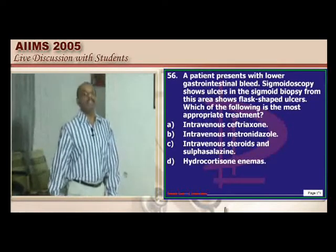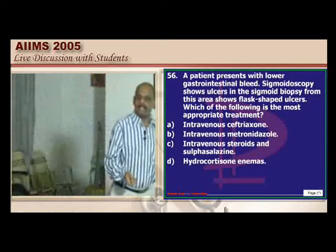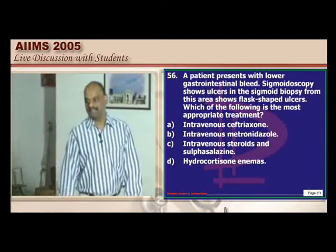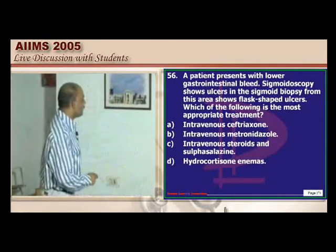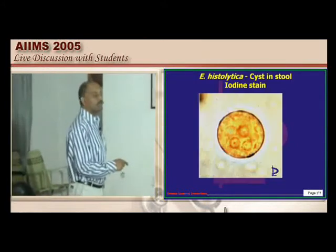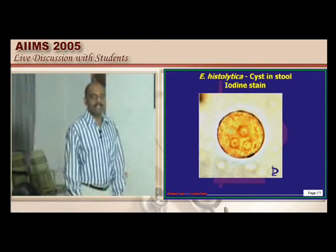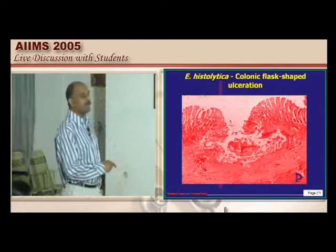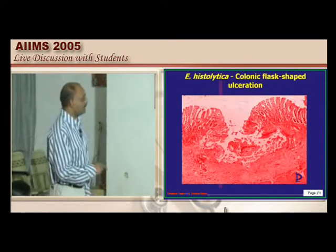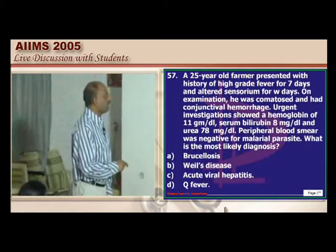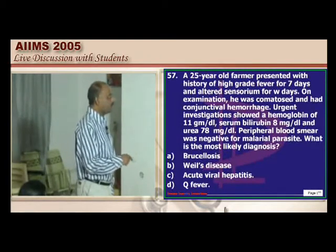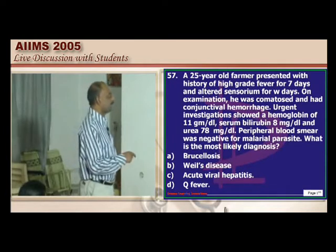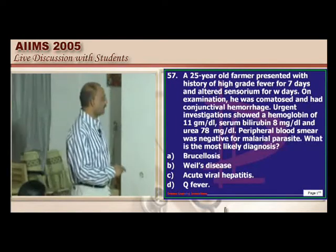In a recent DNB exam, they asked where Pearl stain is used — the answer is iron. Moving to the next question: sigmoidoscopy showing flask-shaped ulcers means amebiasis. The treatment of choice is metronidazole. The cysts of amebiasis should not be forgotten, and endoscopy reveals colonic flask-shaped ulceration, which is the key finding to underscore.